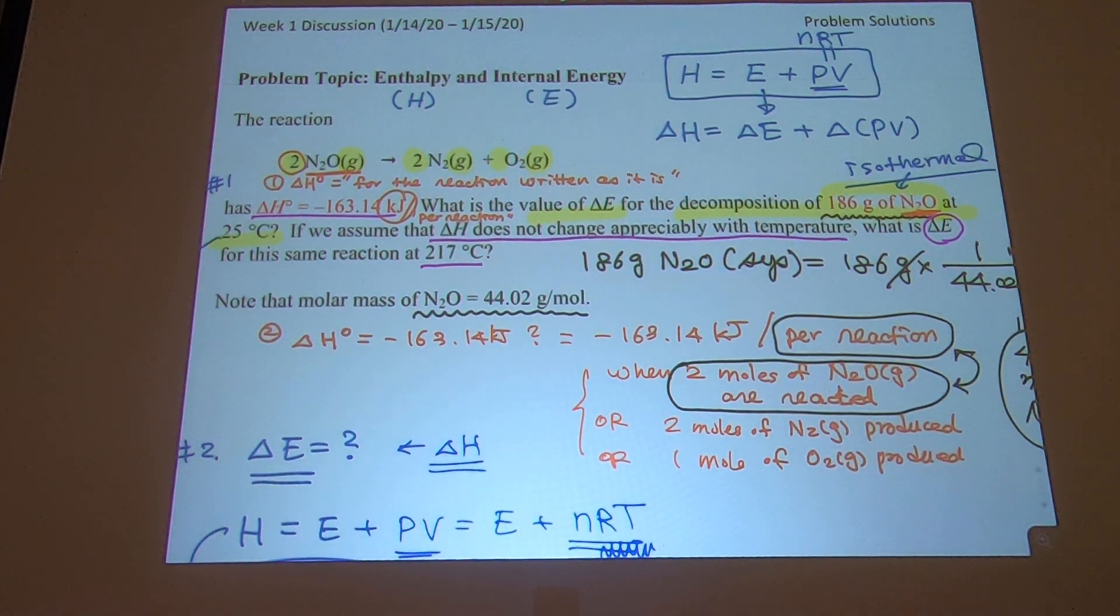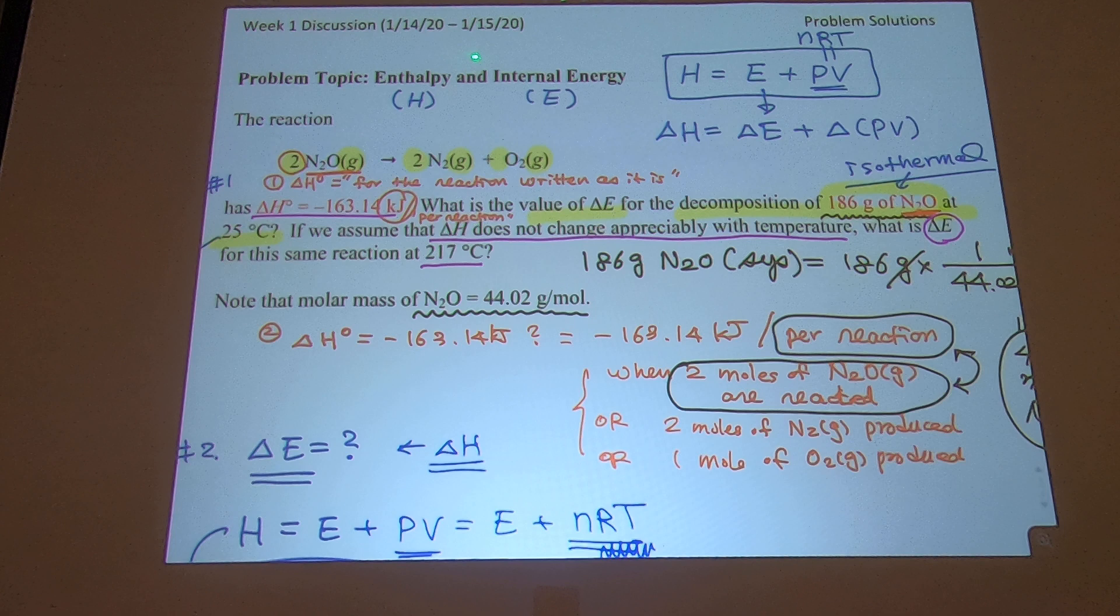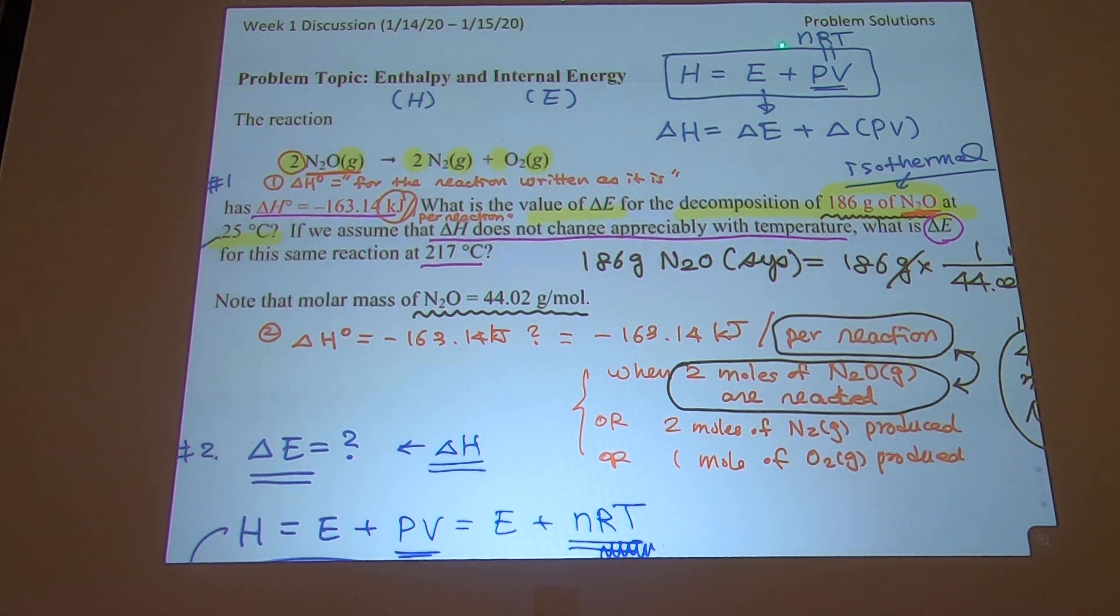When people say Delta H, that is specific for the way the reaction is written. And second, the relationship between Delta H and E is defined by this, and further carry out PV equal NRT, so you can have a new relationship with this.